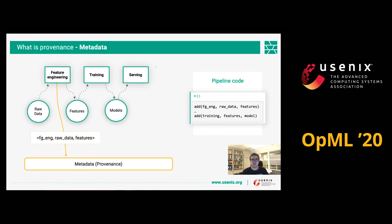What we want is to be able to add relations between our various entities to our provenance graph. For example, we might want to add that a feature engineering application read some raw data and produced a set of features. This can be naively achieved by adding into our code hooks to external libraries — adding feature engineering, raw data as input, features as output — and expecting the external library to do the provenance tracking for us.